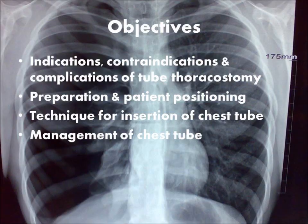Objectives to be covered in this video include the following. Number one, indications, contraindications, and complications of tube thoracostomy. Number two, preparation, including appropriate equipment and patient positioning. Number three, to demonstrate a step-by-step guide to chest tube insertion, as you are most likely to come across this procedure in a trauma setting, and it is difficult to appreciate how it is done.